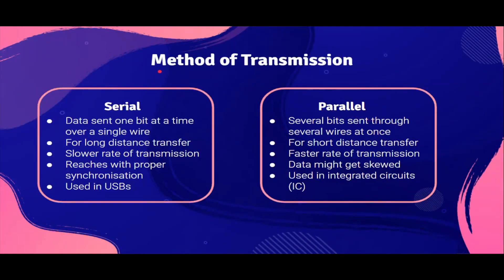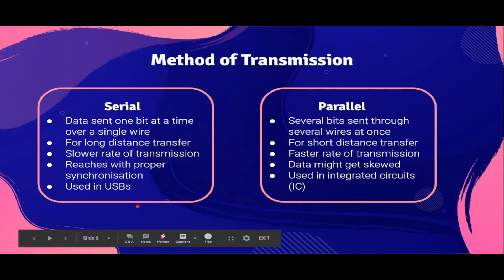Next, method of transmission. We have serial and parallel. Serial means data is sent one bit at a time through a single wire or channel. This is used for long distance transfer because a single wire is used, and there is a slower rate of transmission because data is sent bit by bit. But because of that, it reaches with proper synchronization. It is used in USB.